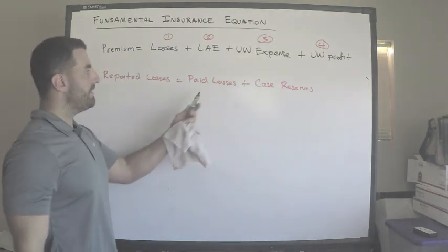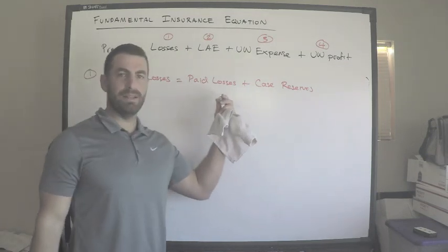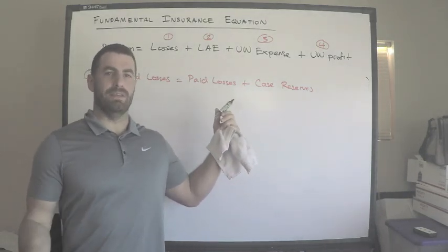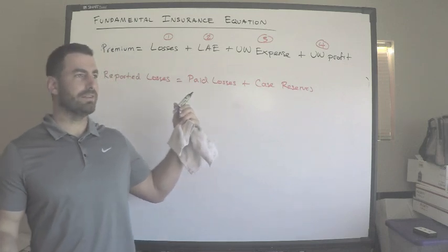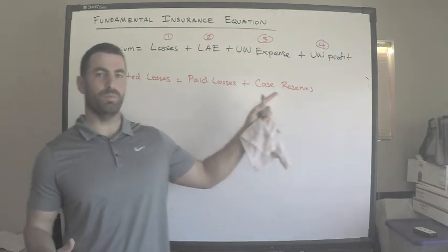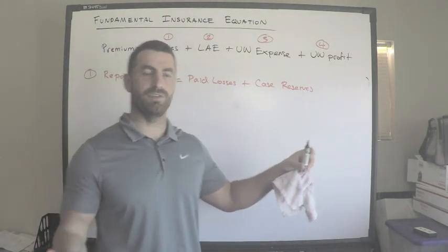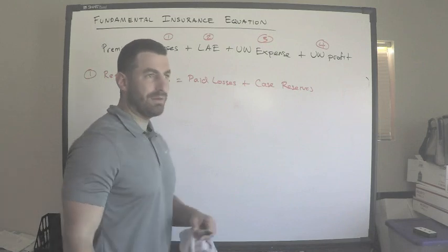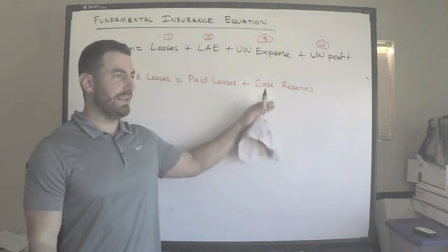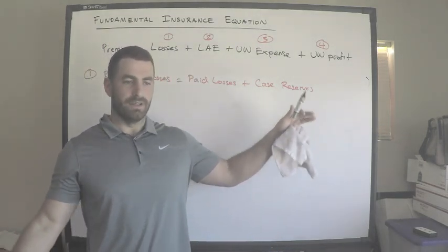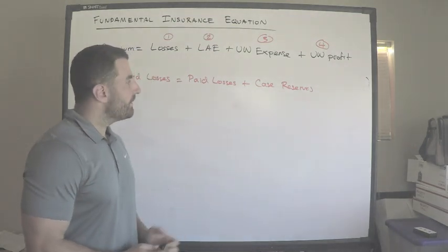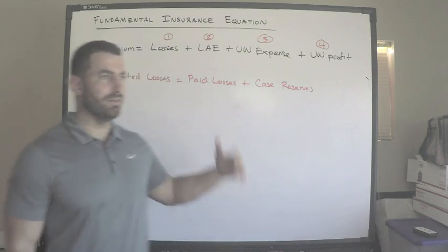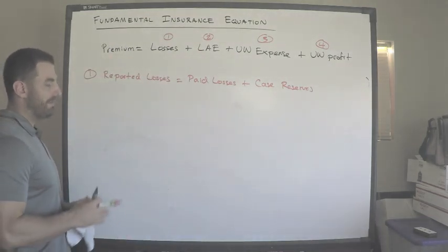Paid losses are the money the insurance company pays out as indemnity — that's our promise to pay policyholders when a covered loss occurs. Case reserves are money we set aside; they can go up or down as the claims adjuster revises estimates of future losses tied to a specific claim.